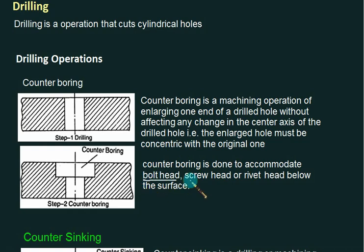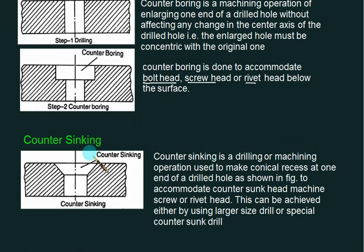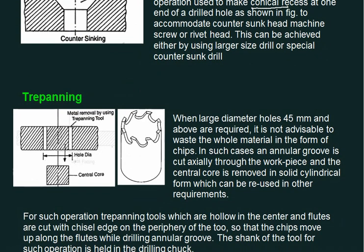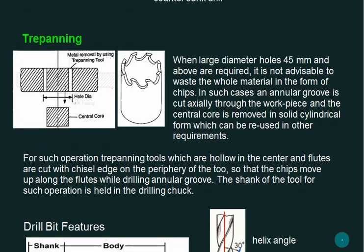Counter boring is done to accommodate the bolt head, screw head, or rivet head below the surface so that it will be flush. Counter sinking is similar to counter boring, but in this case we can fit the conical type of heads, creating a conical recess. The size of the original hole is not disturbed; only a recess is made, one cylindrical and one conical.